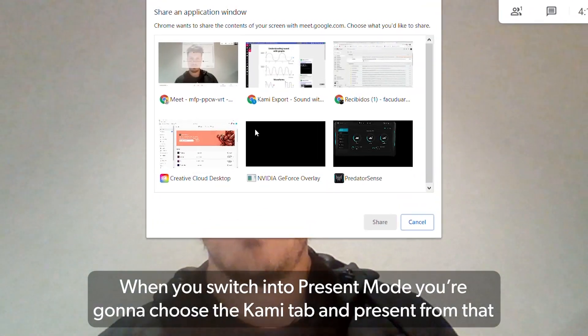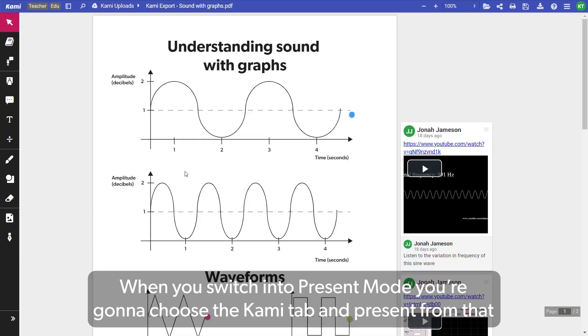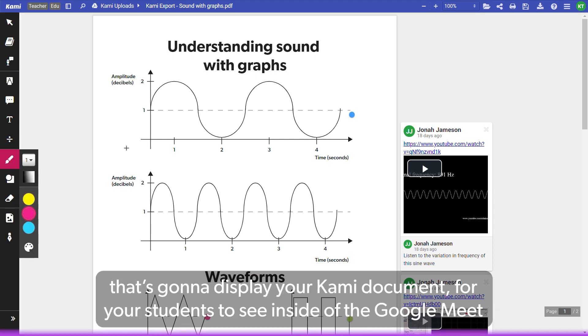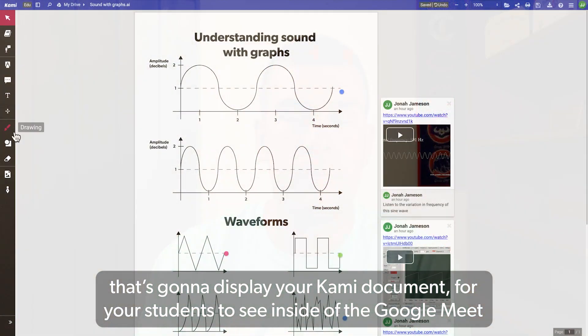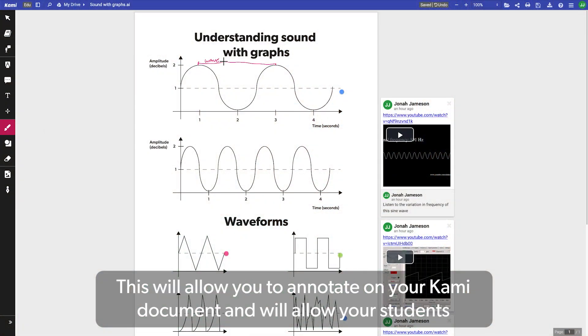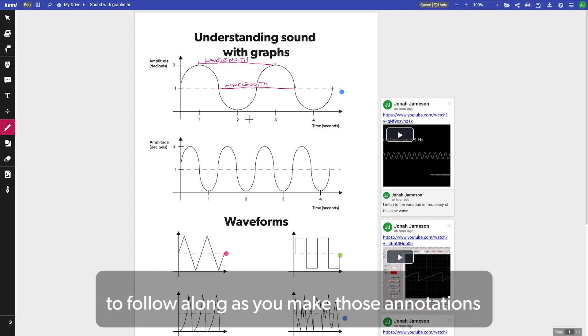When you switch into present mode you're going to choose the Kami tab and you're going to present from that. That's going to display your Kami document for your students to see inside of the Google Meet. This will allow you to annotate on the Kami document and it'll allow your students to follow along as you make those annotations.